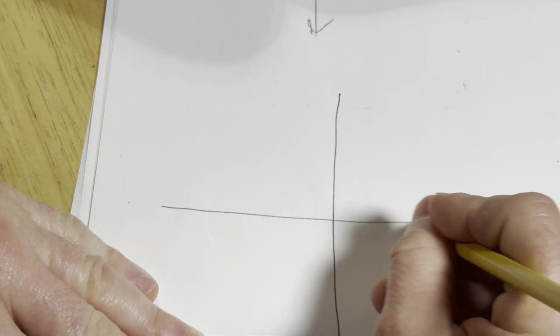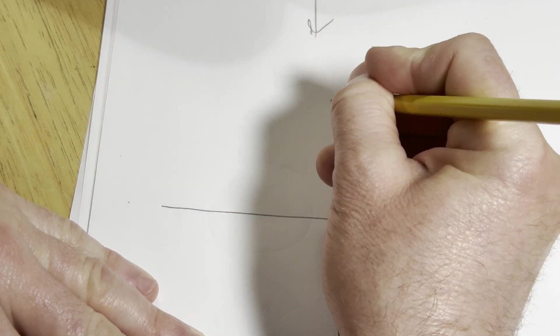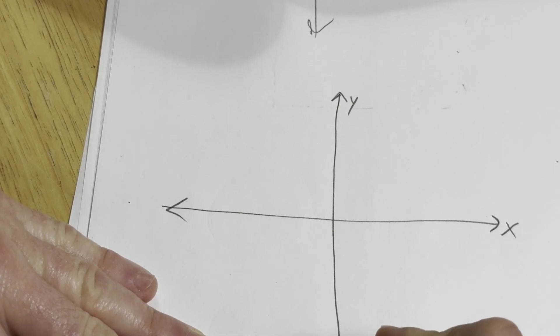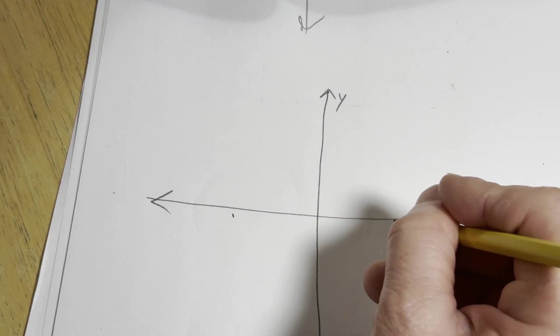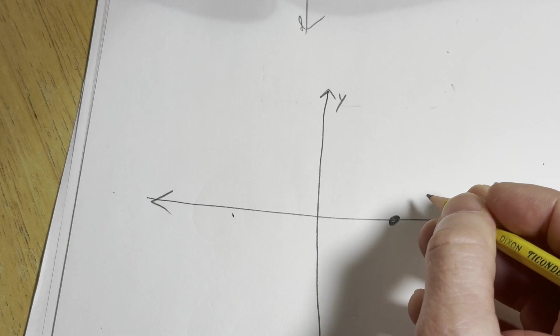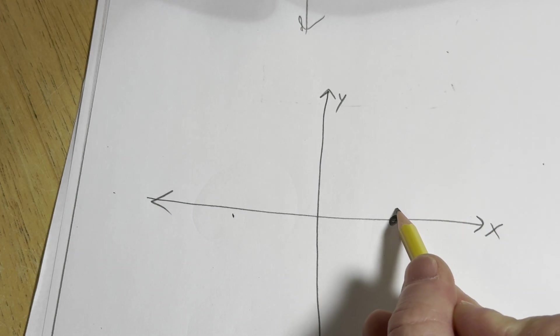So here's the x-axis. Here's the x-axis. Here is the y-axis. And then Lang's claim, as Lang says, the x-axis is not open in the plane. Because given a point on the x-axis, let's pick a point here. Can we find an open disk centered at that point that's contained in the x-axis? No.